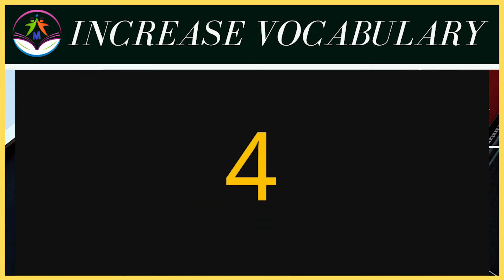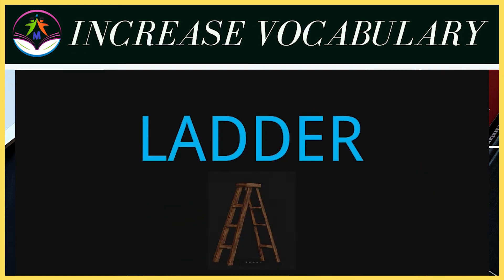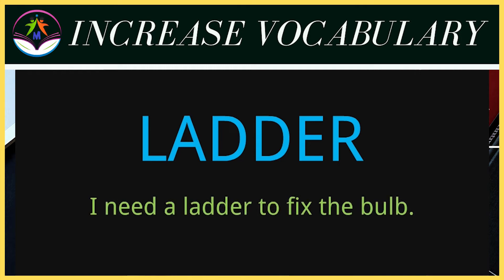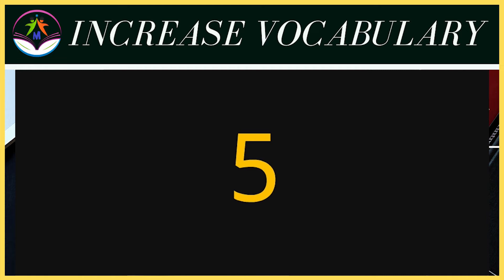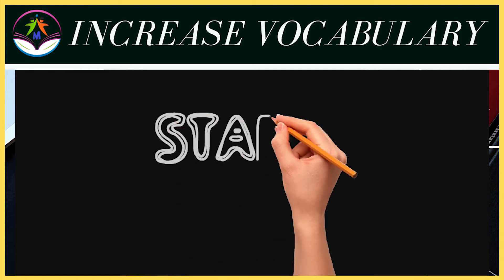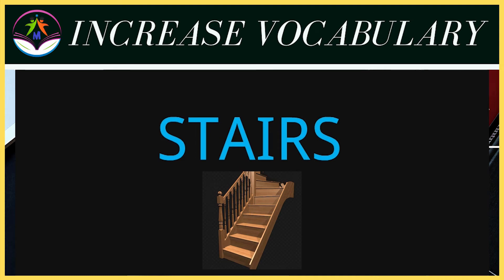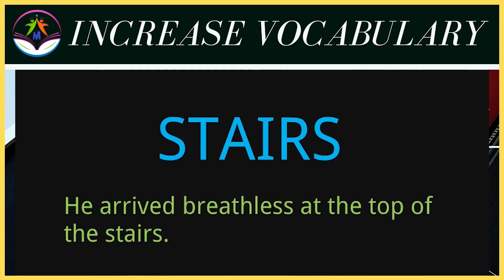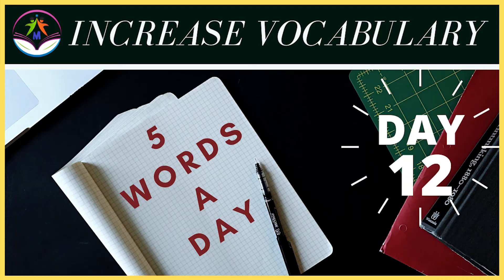Our fourth word is 'ladder' — L-A-D-D-E-R. Ladder का meaning होता है सीढ़ी। जैसे — 'I need a ladder to fix the bulb.' मुझे bulb लगाने के लिए एक सीढ़ी चाहिए। Ladder से मिलता जुलता एक और word है 'stairs' — S-T-A-I-R-S। Stairs का meaning भी होता है सीढ़ी, लेकिन यह वह सीढ़ी होती है जो सीमेंट से बनी होती है जिसे हम जीना बोलते हैं। Ladder वह सीढ़ी होती है जो बांस या लोहे की बनी होती है और जिसे एक स्थान से दूसरे स्थान पर ले जा सकते हैं। जैसे — 'He arrived breathless at the top of the stairs.' वह सबसे ऊंची वाली सीढ़ी पर हांफता हुआ पहुंचा।